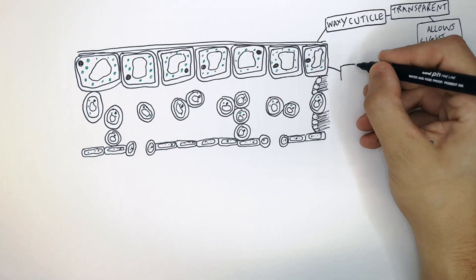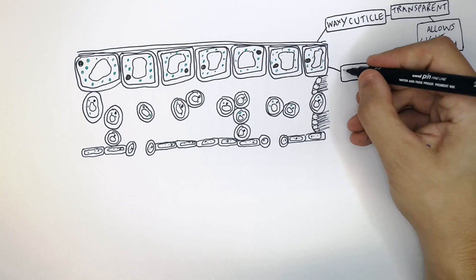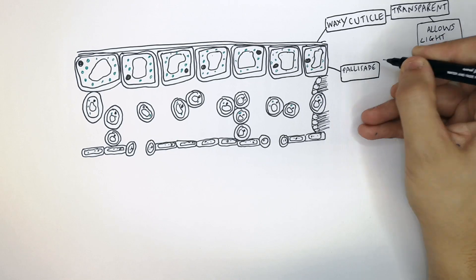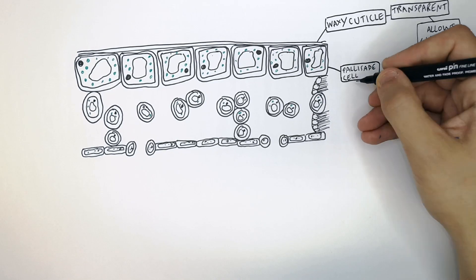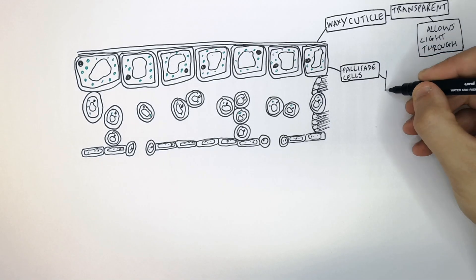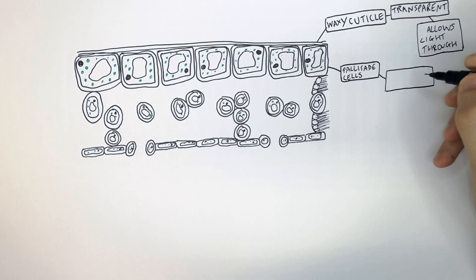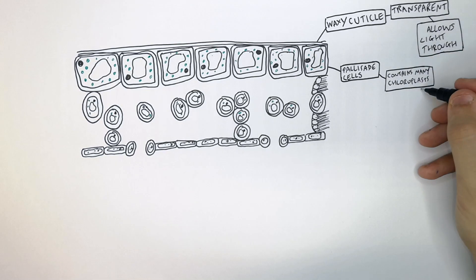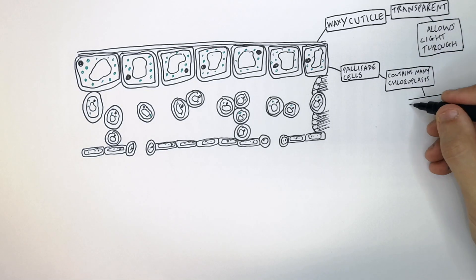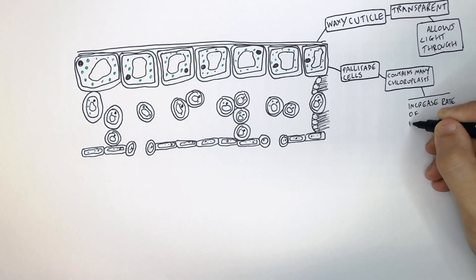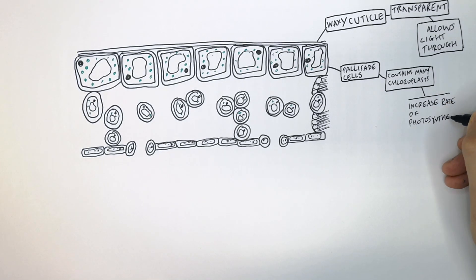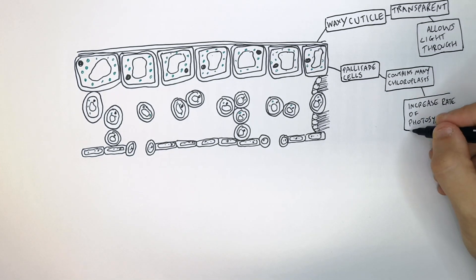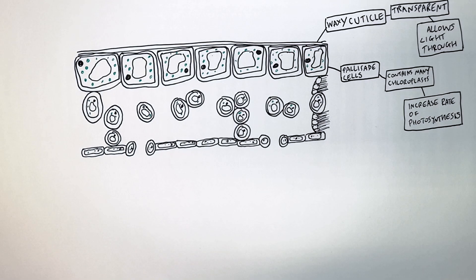The palisade cells make up the palisade mesophyll layer. These palisade cells have got many chloroplasts to increase the rate of photosynthesis. If you increase the rate of photosynthesis, you're producing more glucose for the plant.